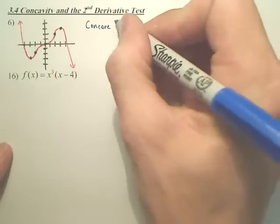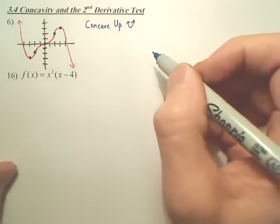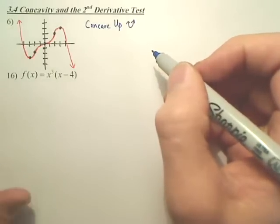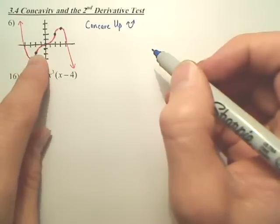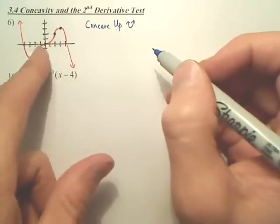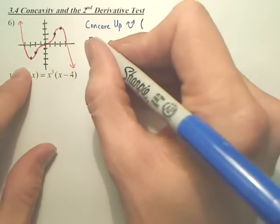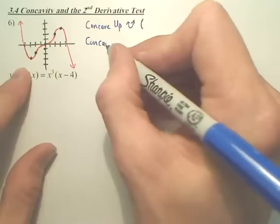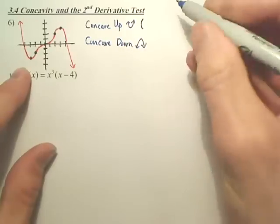So concave up is happy. Looking at the graph, where is our graph happy? Well, isn't it happy right here to that green dot right there? And then doesn't it change to kind of like a frown? So for that first, where is it happy? And where is it concave down? Where is it sad?